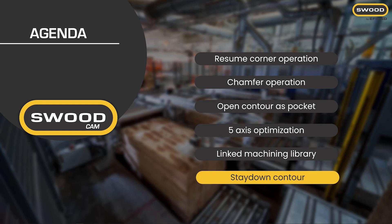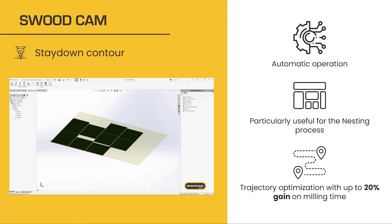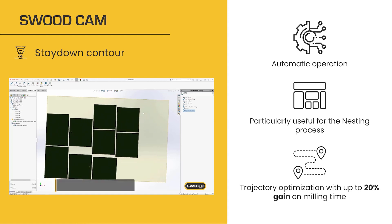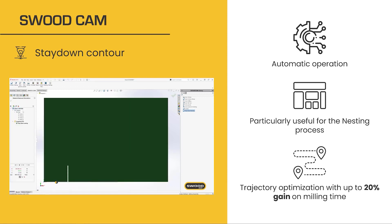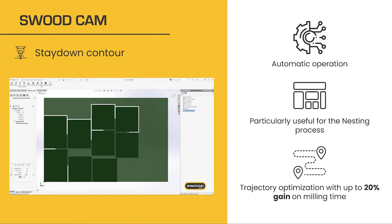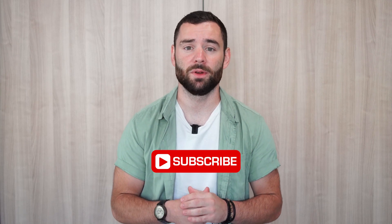We are now coming to the last SWOOT CAM new feature, which is a new machining strategy called the Stay Down contour. This operation creates trajectories without any tool jams, and this optimization is up to 20% more efficient than a conventional contour. This operation is particularly useful to cut out nesting sheets. If you want to know more about SWOOT and our solutions, do not forget to click the subscribe button, and do not hesitate to contact us on our website SWOOT.EFICAD.COM. See you soon.